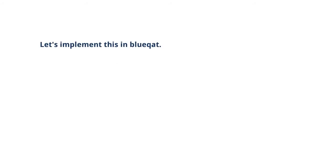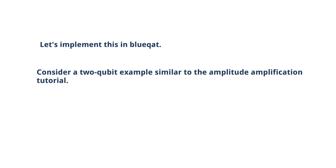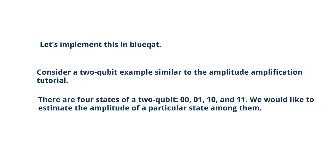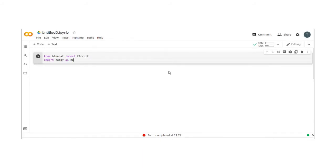Let's implement this in BlueCat. Consider a two-qubit example similar to the amplitude amplification tutorial. There are four states of a two-qubit: 00, 01, 10, and 11. We would like to estimate the amplitude of a particular state among them. First of all, from BlueCat import circuit, import numpy as NP.